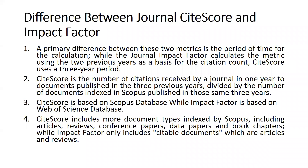The first difference I have observed is that CiteScore and Impact Factor depend on which database indexes the journal. Journals that are Scopus-indexed have a CiteScore, while journals indexed in Web of Science have an Impact Factor. There is also a difference depending on the period of time used for calculation.